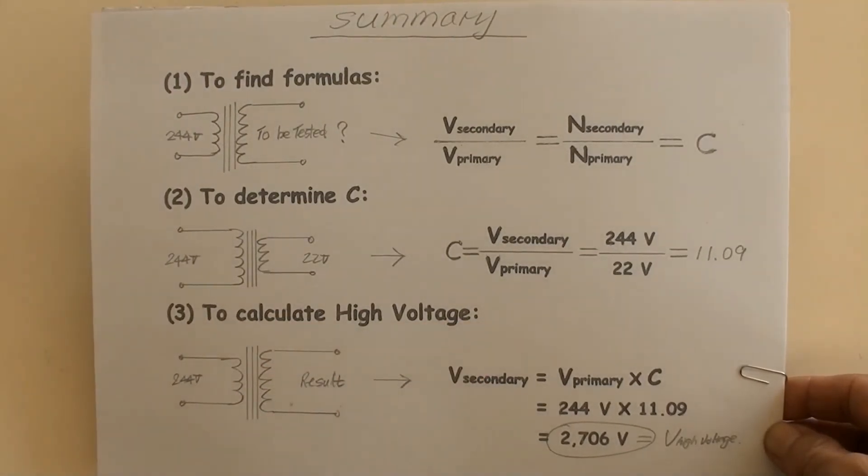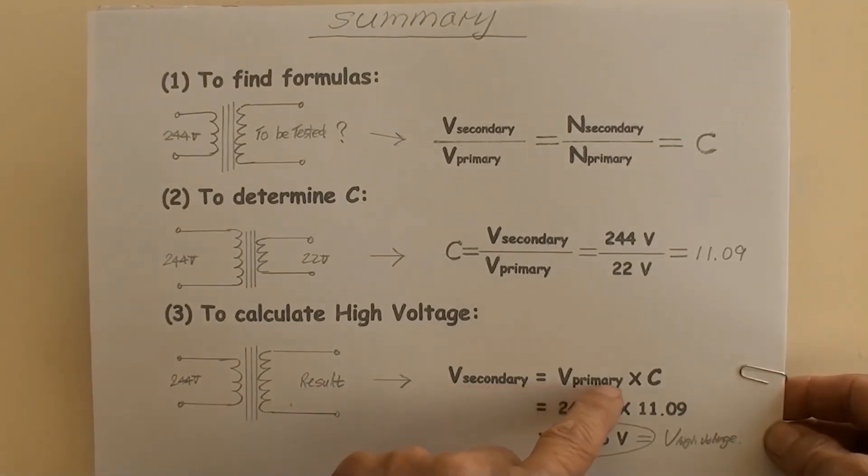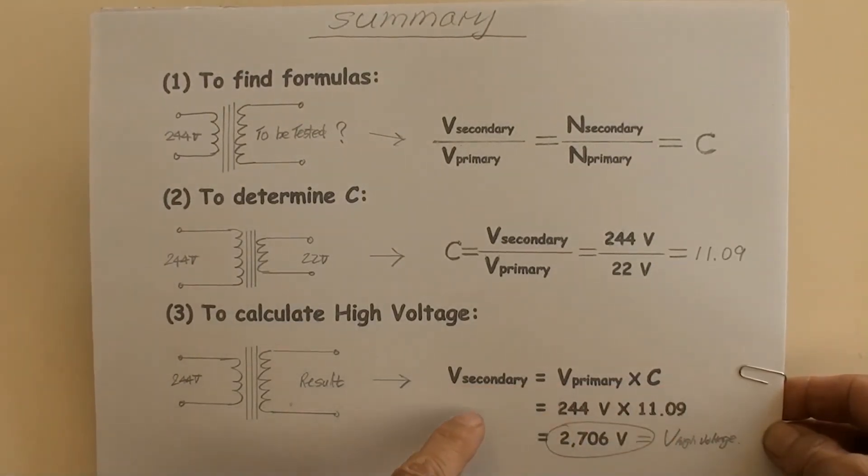Number 3: To calculate high voltage. The high voltage equals V secondary equals V primary times C equals 244 volts times 11.09 equals 2706 volts.